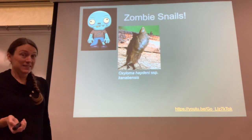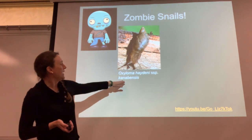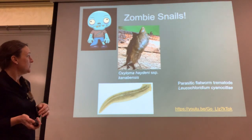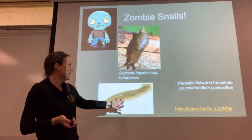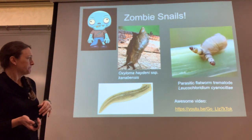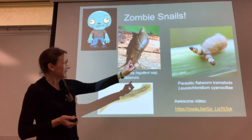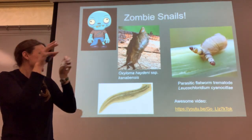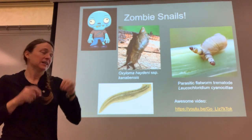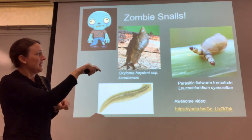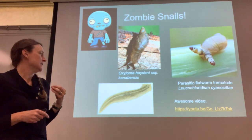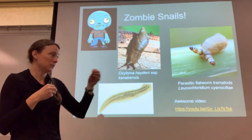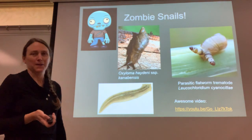There are also zombie snails. This is the Kanab ambersnail, found in only a few locations in the Grand Canyon. Other species of amber snails are affected by a parasitic flatworm. The flatworm gets into the snail, gets into the eye stalks, and creates these weird projections that make the eye stalks look like pulsating insect larvae so that birds fly down and attack the snail and get the larvae in their own bodies. A lot of these zombie stories are about the parasite getting from one host into the next.